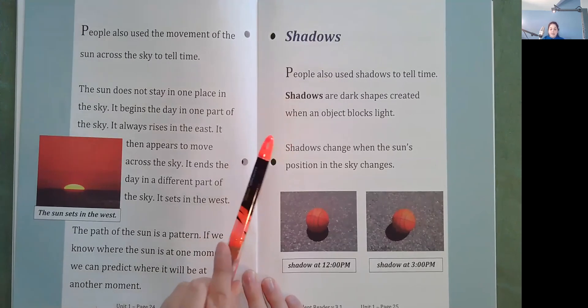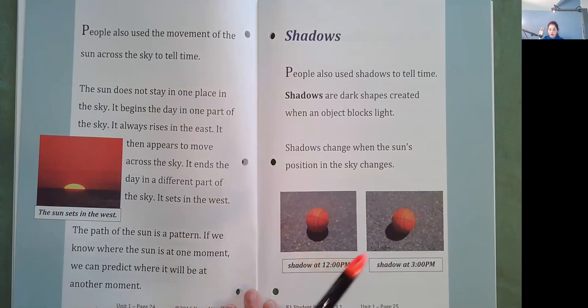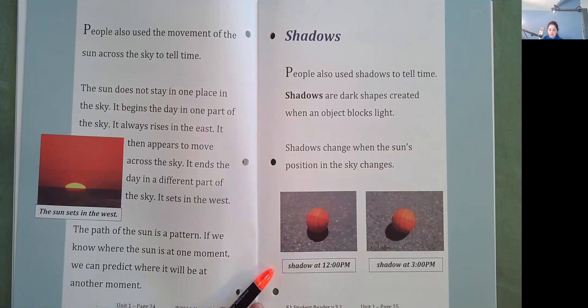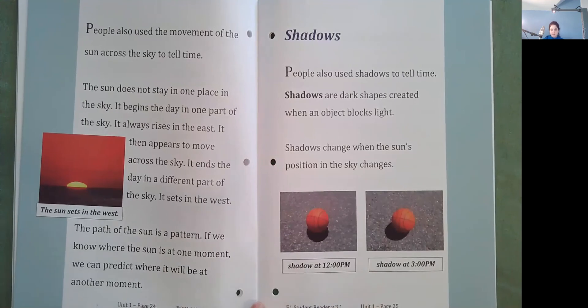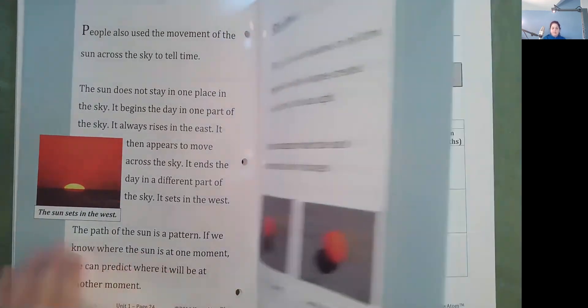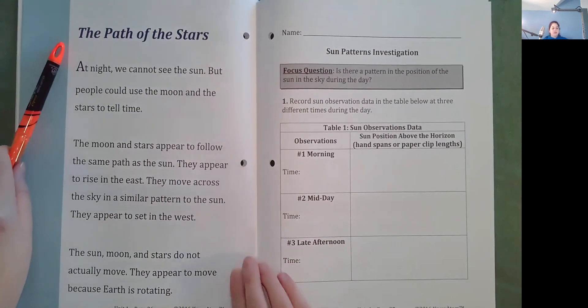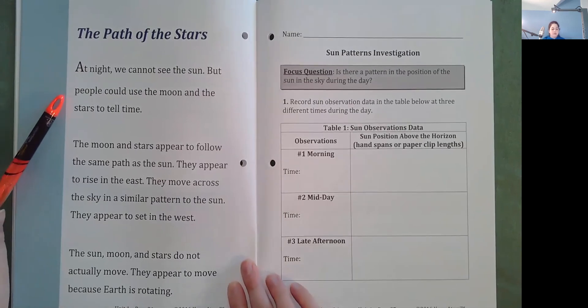Shadows. People also used shadows to tell time. Shadows are dark shapes created when an object blocks light. Shadows change when the sun's position in the sky changes. So here we have the same ball in the same place. Here's the shadow it creates at 12 p.m., and here's the shadow at 3 p.m. Is it different?